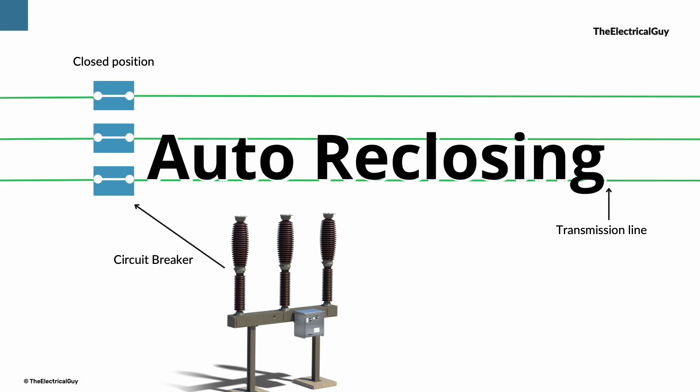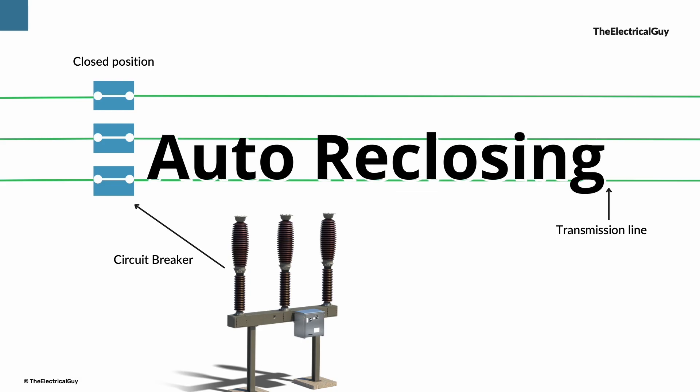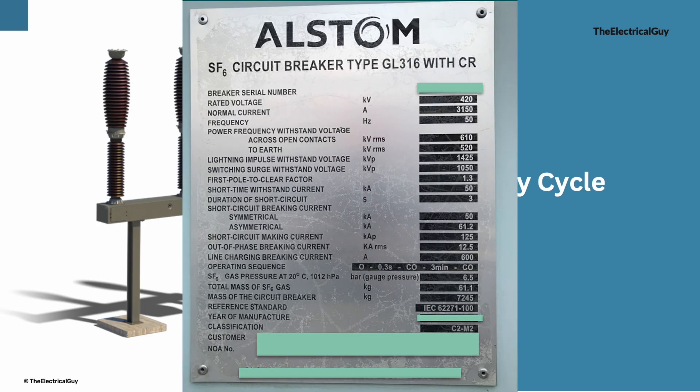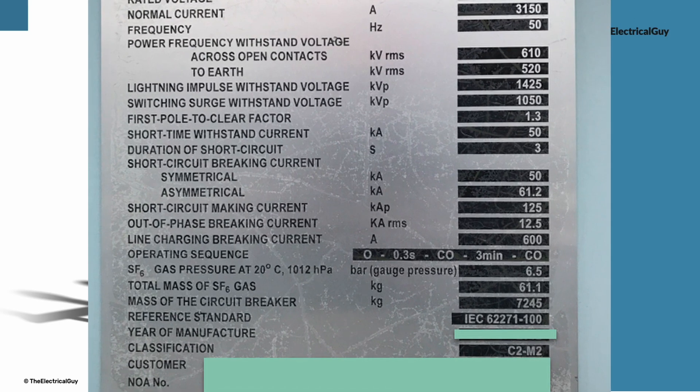So that is nothing but the auto reclosing. Now let us talk about duty cycle of a circuit breaker. If you would have seen a nameplate of a medium or high and extra high voltage circuit breaker, you would have seen something called as duty cycle or rated operating duty cycle, or few people also call it as auto reclosing cycle.